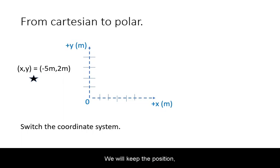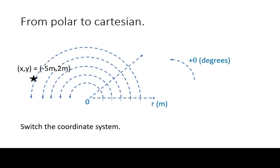We will keep the position and the origin. Let's switch the coordinate system to polar, and we want to know how to express the same position using radial distance and angle from the reference direction.